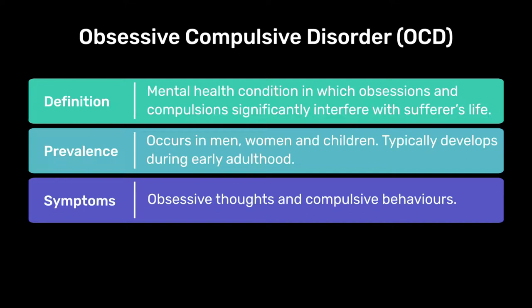The obsessions and compulsions are typically linked. For example, if an individual has an obsessive thought that their house is going to get burgled, the compulsive behaviour is normally associated with that — they may engage in checking locks and windows in order to prevent an intruder coming in.